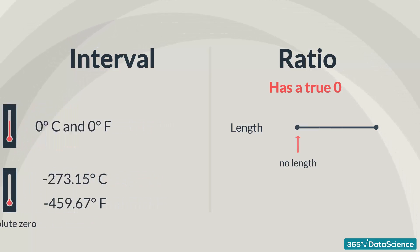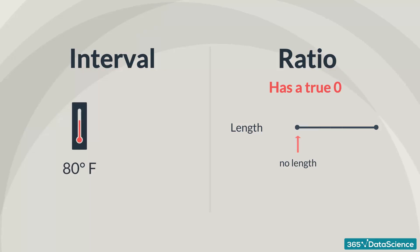However, we can easily say that 80 degrees Fahrenheit is less than 100 degrees Fahrenheit. In the case of interval variables, the difference is meaningful, but the zero is not.